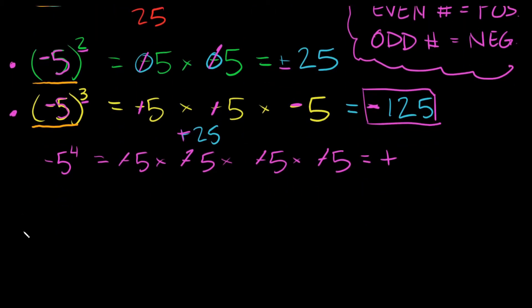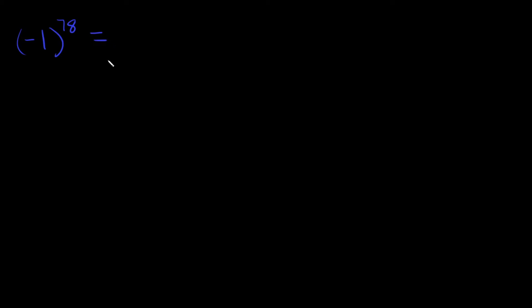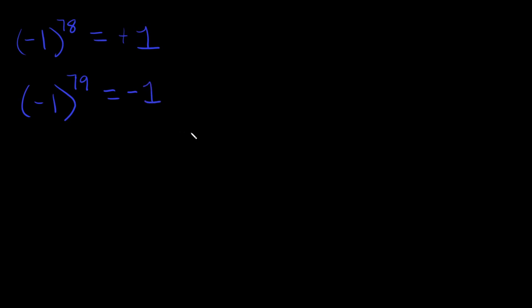Let's do one last example to drive that point home. If I had negative 1 raised to the 78th power — 78 is an even number, so every negative will cancel out with another negative. They all have a partner, so this simply equals positive 1. If we had negative 1 raised to the 79th power — 79 is an odd number, so the answer is going to be negative, because there's going to be one negative sign left over. This is just negative 1.